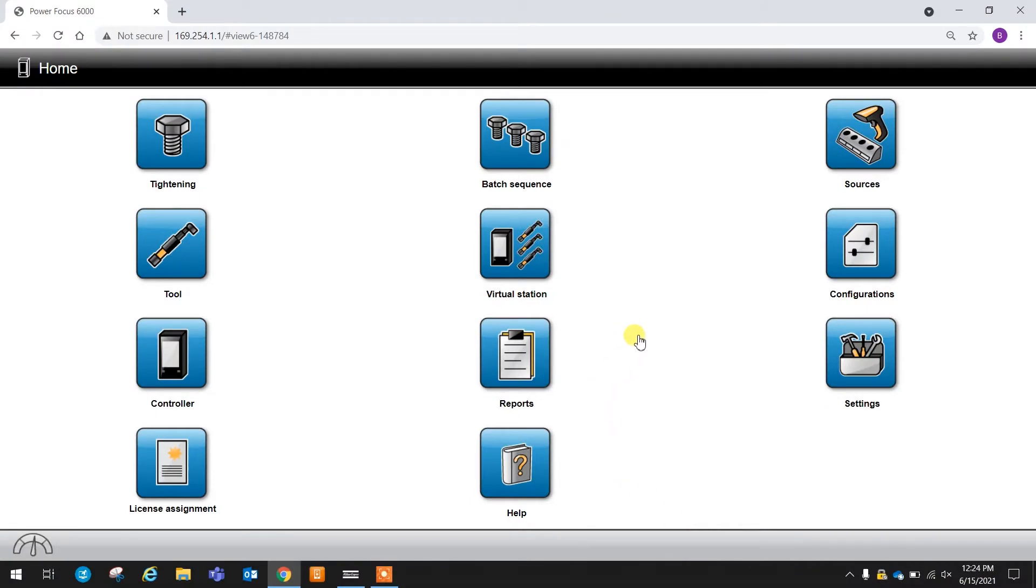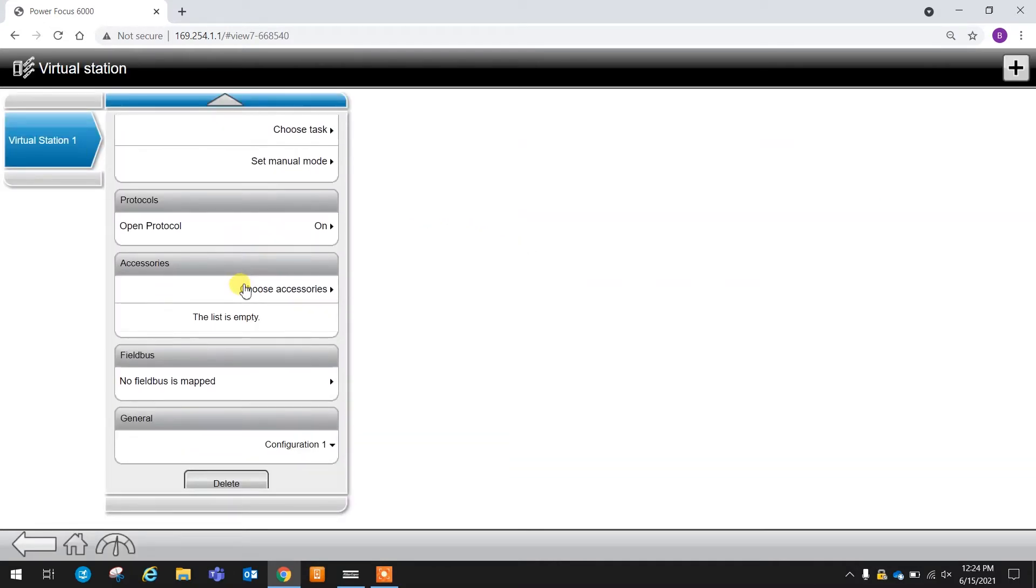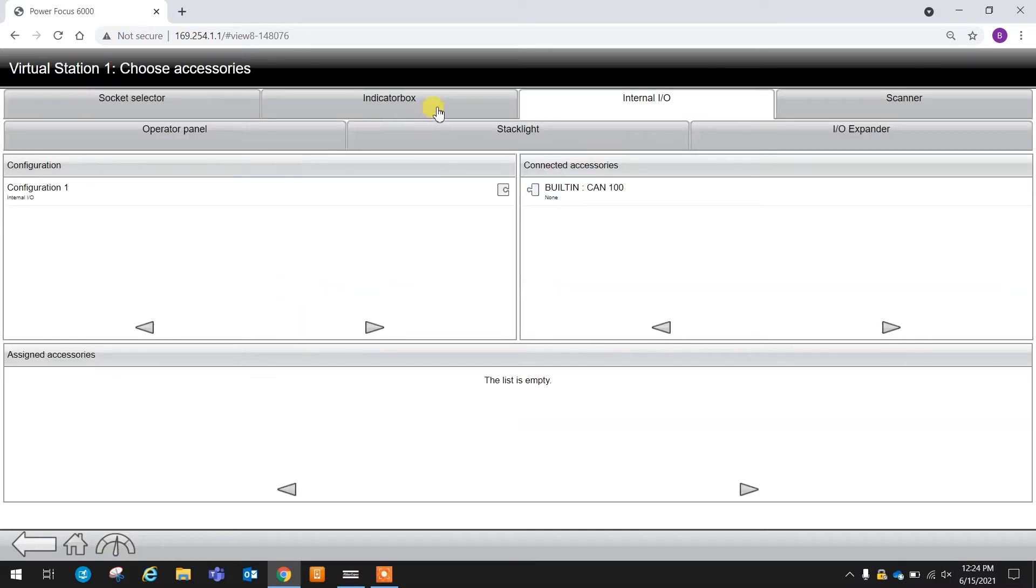So now that we're down in the software, what we're going to do is we're going to go into the virtual station, we're going to scroll down to our accessories tab, we're going to click in here, and what you're going to notice is we have all these different connected accessories up at the top.